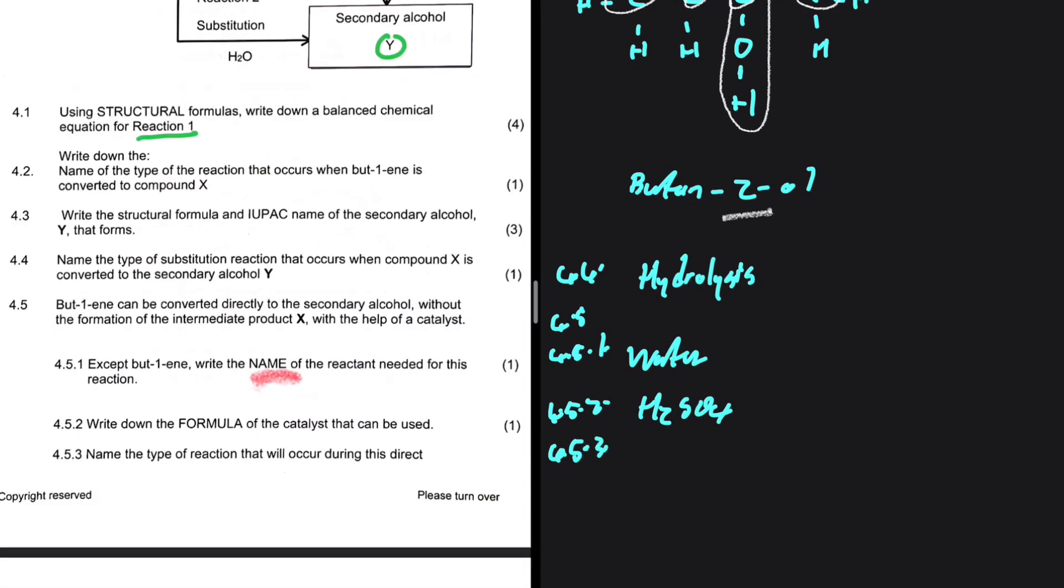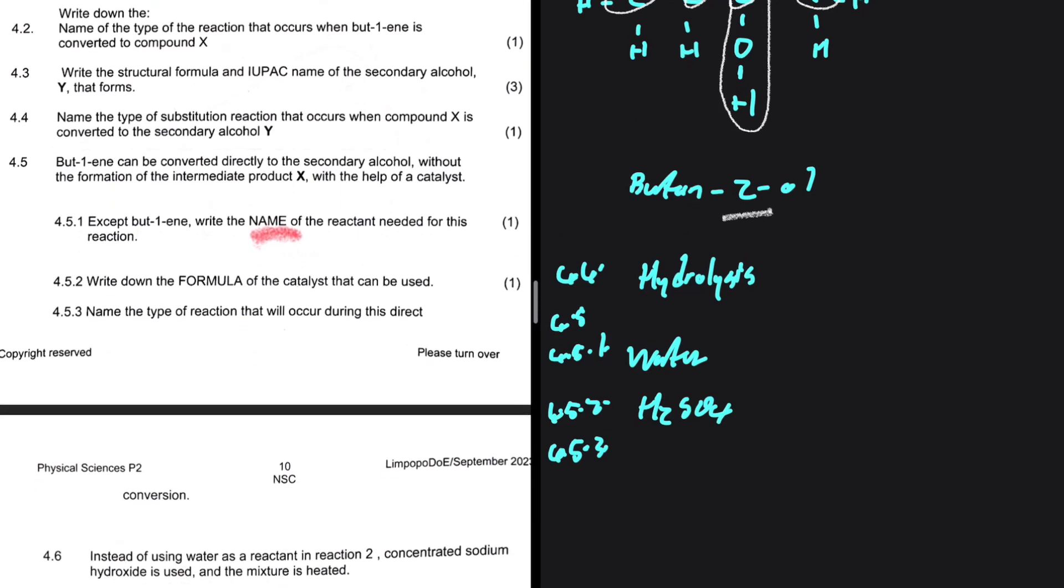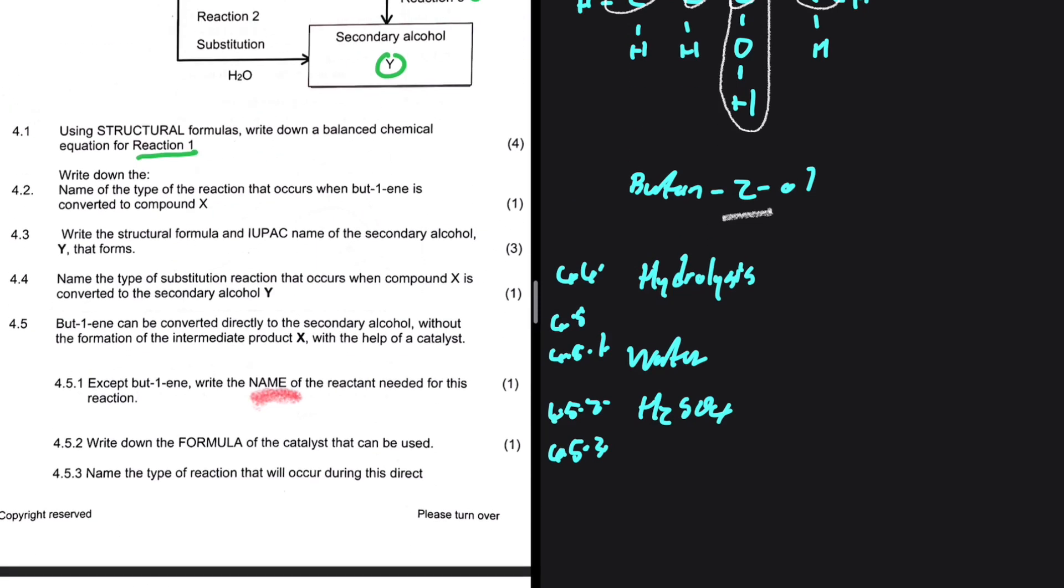And 4.5.3. Name the type of reaction that will occur during this direct conversion. It's two marks for one question, because the same question is getting asked in 4.2. The type of reaction that will occur is addition.